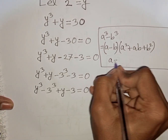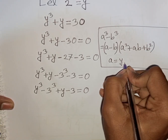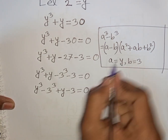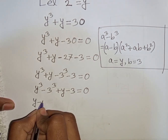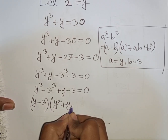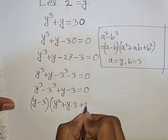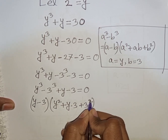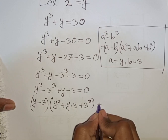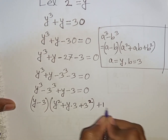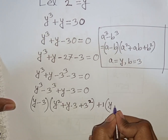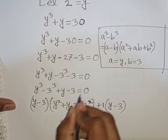Here a will be equal to y, then b will be equal to 3. So according to this formula I can write here: y minus 3, times y square plus y times 3 plus 3 square. That is the formula of a cube minus b cube. Then plus 1 is common from the remaining terms, so plus 1 times y minus 3, bracket close, is equal to 0.